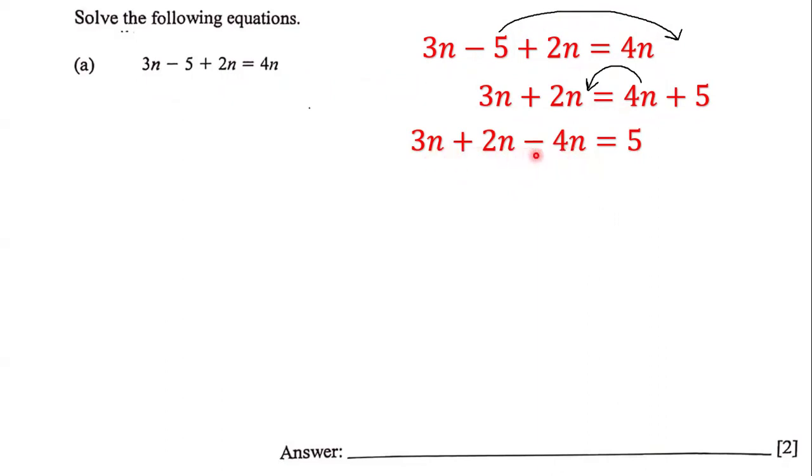...are like terms, so we can add and subtract them. We have 3n plus 2n—3n plus 2n is 5n—and we bring down the negative 4n equals 5. Now we're going to do 5n minus 4n.